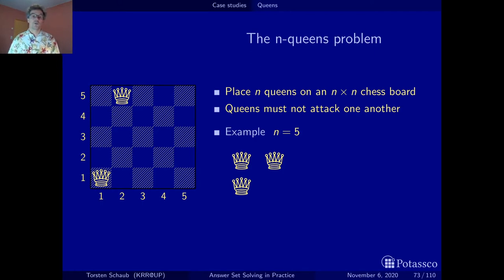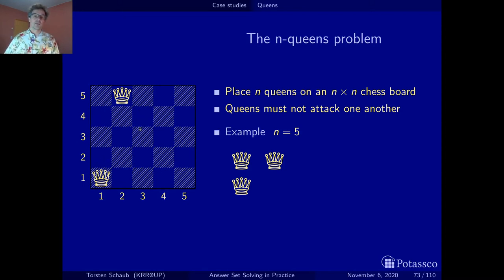For the third queen, we only have to look in the lines where we have put no queen so far. This one is blocked by a diagonal attack, and this one is also blocked by a diagonal attack. So there is actually only one possibility — we can put the third queen only on this position here.